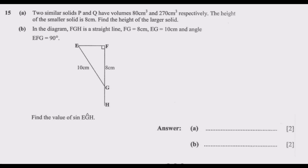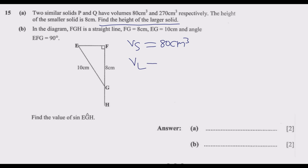Two similar solids P and Q have volumes of 80 cm³ and 270 cm³ respectively. The height of the smaller solid is 8 cm. We need to find the height of the larger solid. We've been given the volume of the smaller solid as 80 cm³, the volume of the larger solid as 270 cm³, and the height of the smaller as 8 cm.